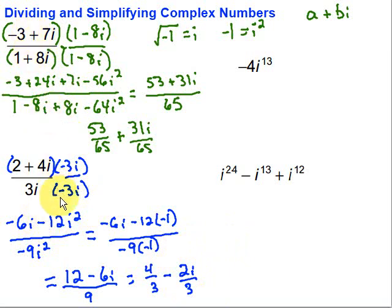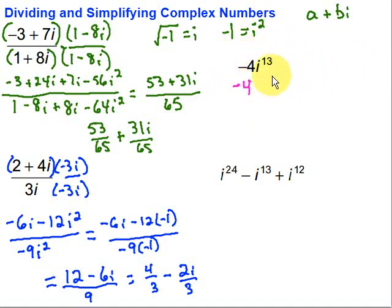The key with division is to make sure we get rid of the i from the denominator, because we can't have that square root — remember, i is really the square root of negative 1. Now, when we have i to larger powers, the first thing we want to do is write i to an even power. When we multiply things with powers, we add the exponents. So I'm going to break this up into negative 4 times i times i to the 12th — I just take one i out of the group. And 1 plus 12 is 13, so that's the same thing.